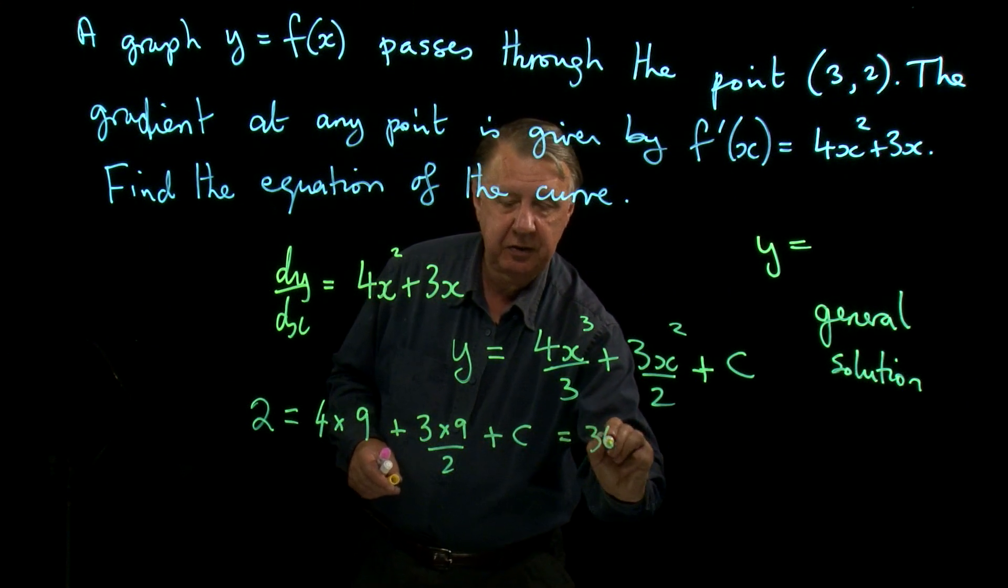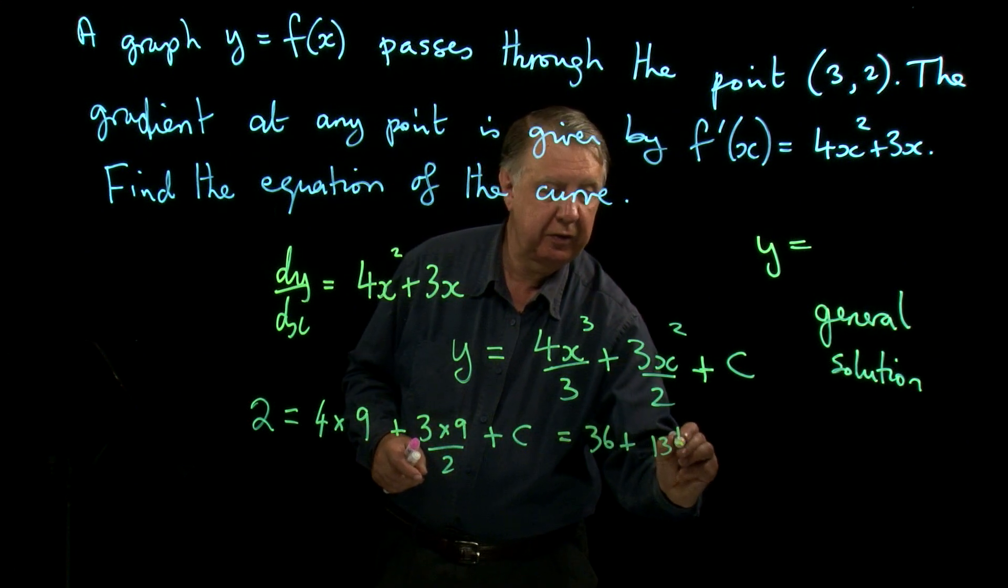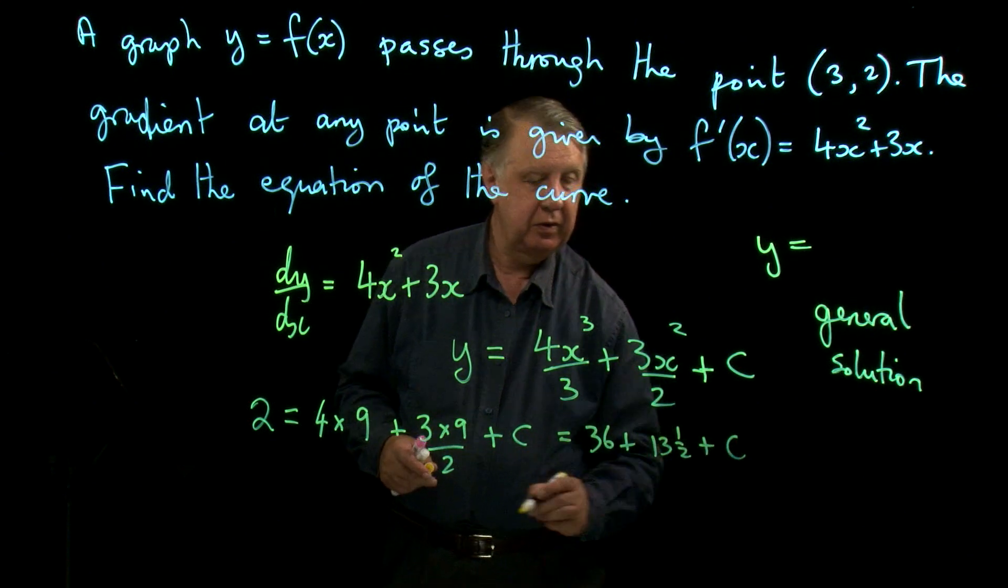So that's 36 plus 27 over 2, which is 13 and a half plus c.